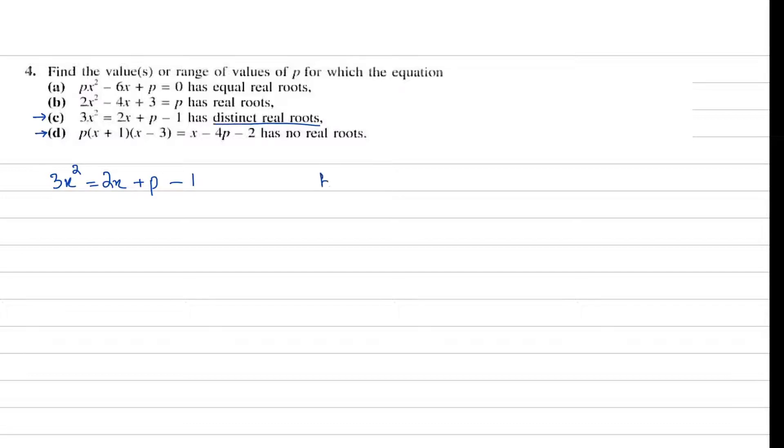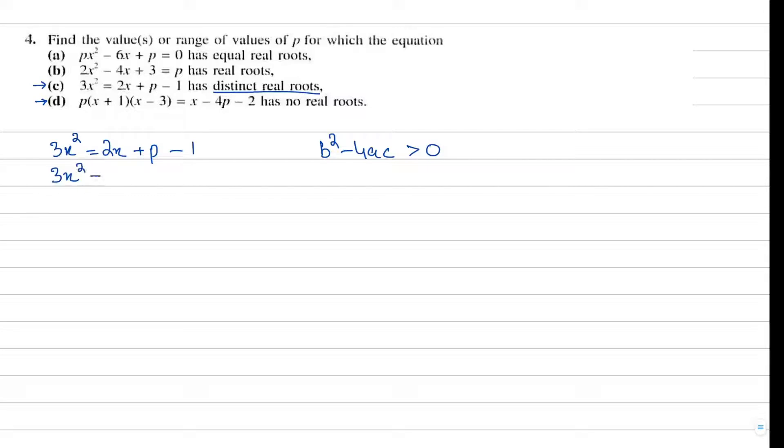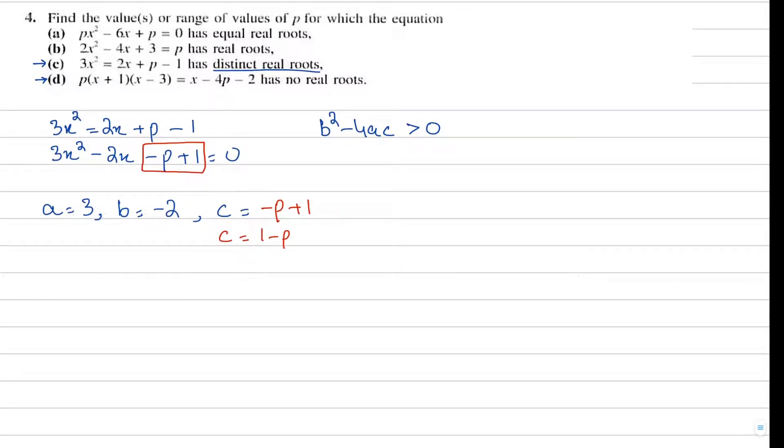Distinct real roots means the discriminant we'll keep greater than zero. First, let's write this correctly: 3x squared minus 2x minus p plus 1 equals zero. Let's identify a, b, and c. a is equal to 3, b is equal to negative 2, and c is the whole constant - the terms with no variable. Our constant is minus p plus 1, or written nicely, 1 minus p.